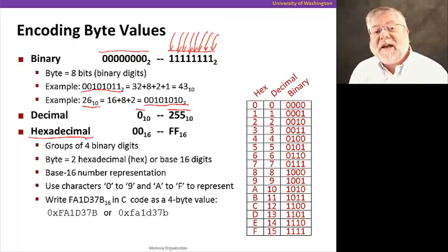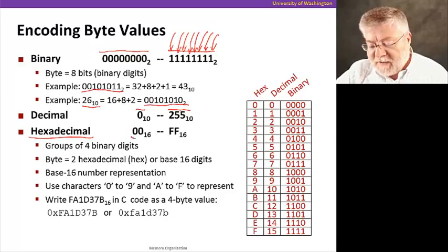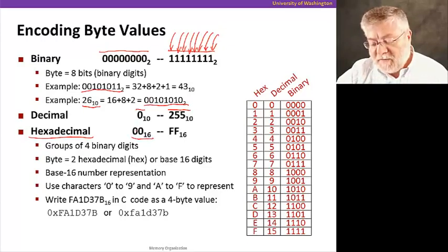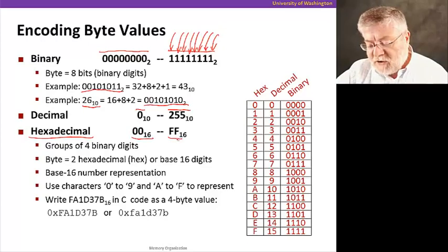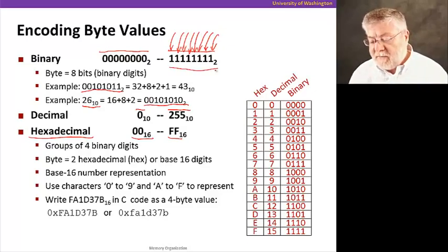So now, instead of a ones column or a twos column, we have a ones column and a sixteens column. In this case, we would represent a byte by the digits 00. Each one of these is a group of four binary digits. And we can range all the way up to FF, the case of all one binary digits.